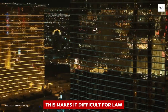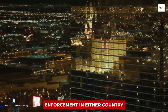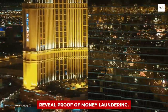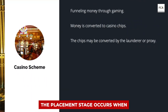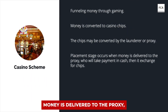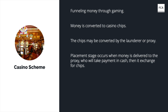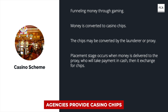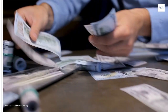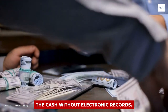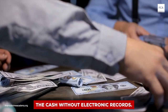This makes it difficult for law enforcement in either country to gather evidence that might reveal proof of money laundering. The placement stage occurs when money is delivered to the proxy, who will take payment in cash and then exchange it for chips. In some countries, travel agencies provide casino chips as part of their packages, and paying for these packages in cash can be an effective way to place the cash without electronic records.